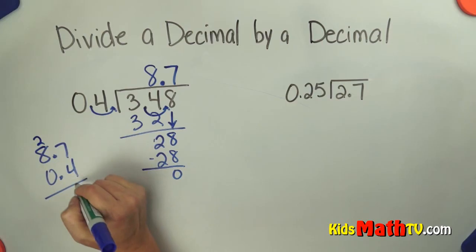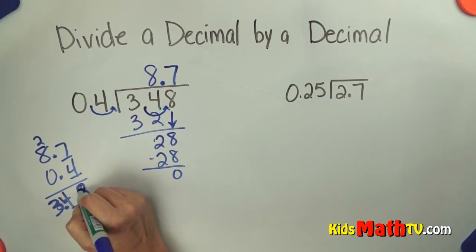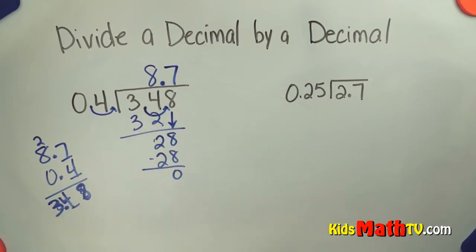Let's see: 28, 32, 33, 34. And I see 1, 2 decimal places in my problem so I need 1, 2 decimal places in my answer. So we get the same answer: 3 and 48 hundredths was my divisor.